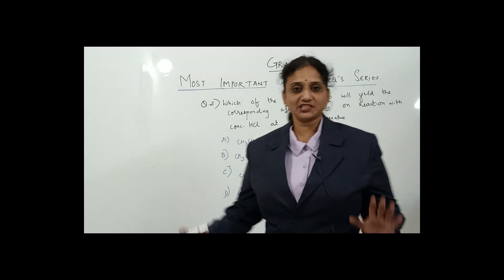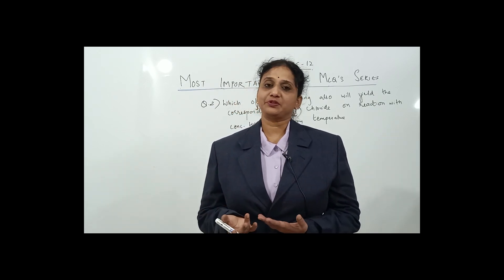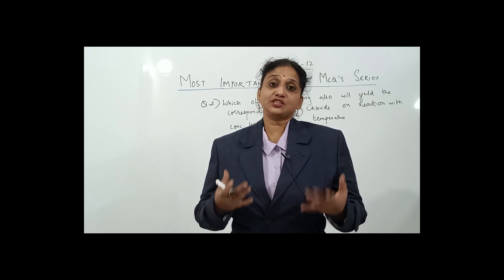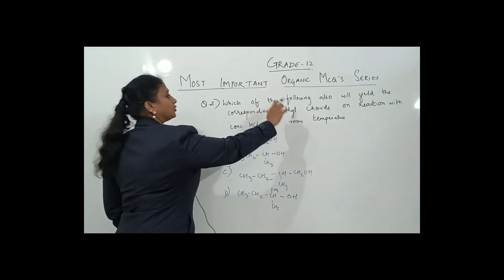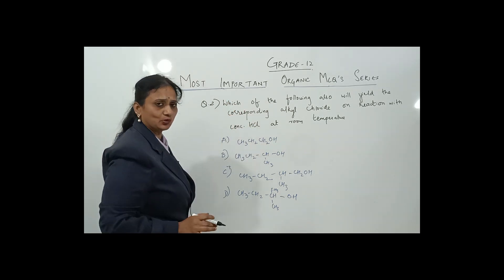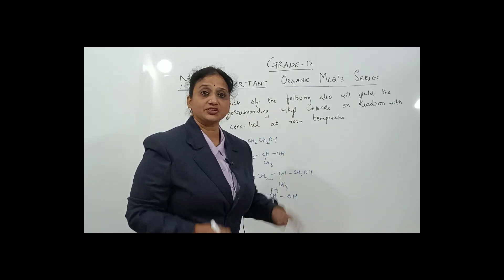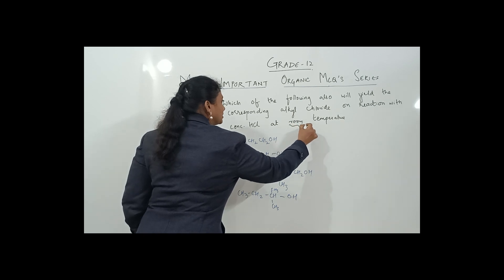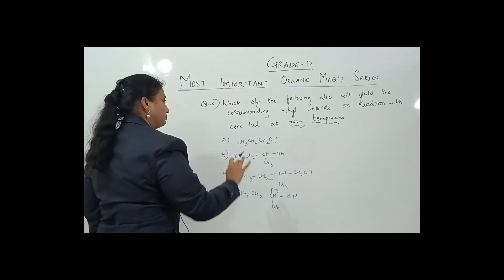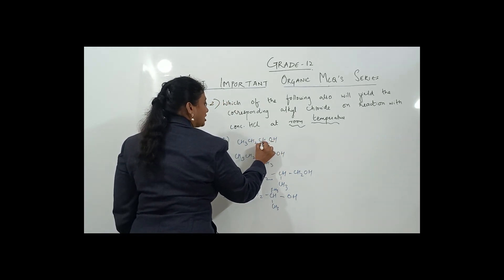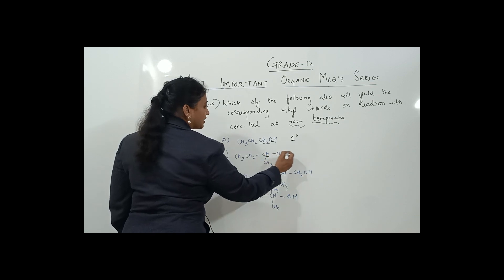Concept is clear — tertiary more stable than secondary than primary; halogen acids: HI easiest to break, then HBr, then HCl. The next question says: which of the following alcohols will yield the corresponding alkyl chloride on reaction with concentrated HCl at room temperature? They're giving a clue here: room temperature.